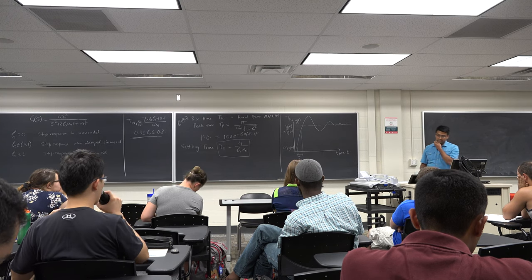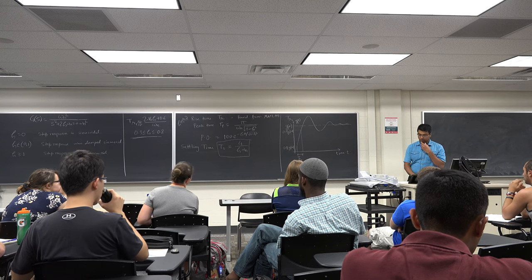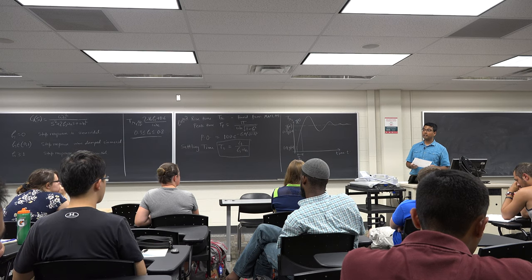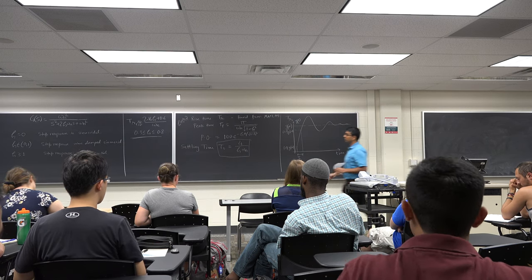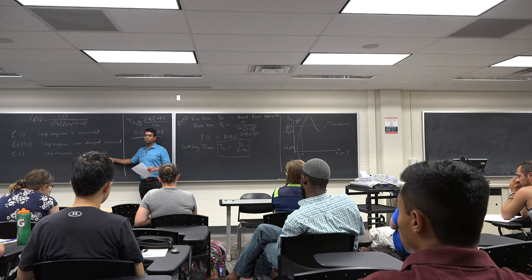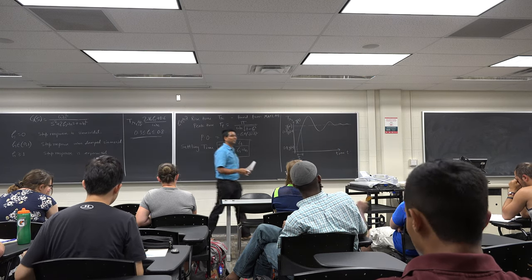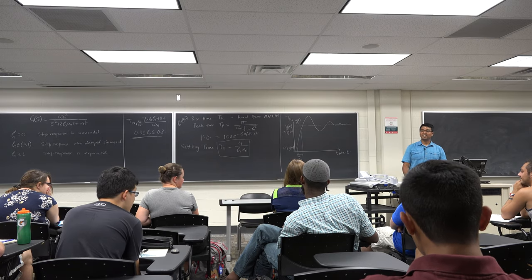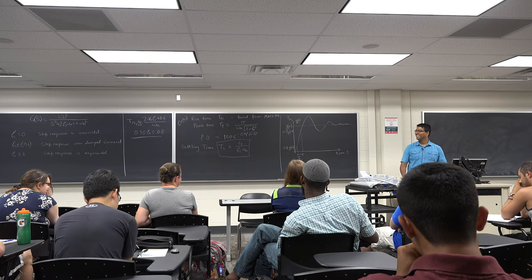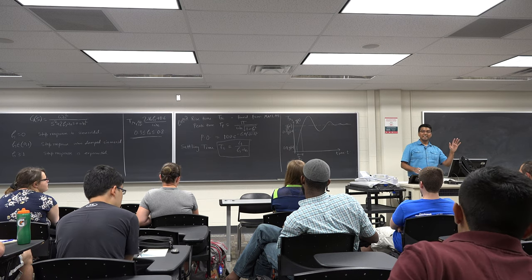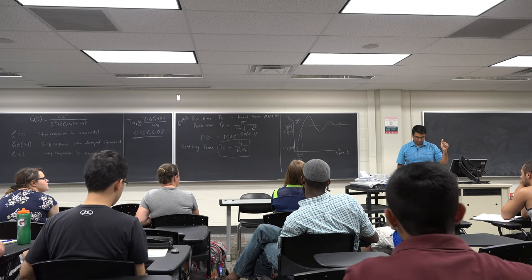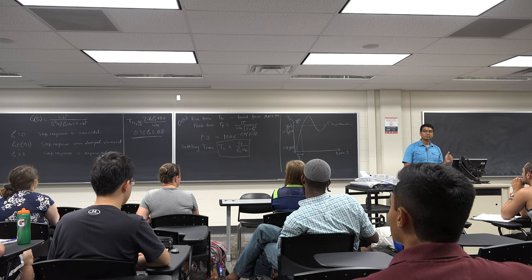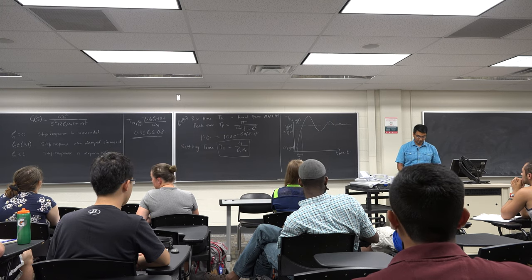I have two options: should we do a numerical example applying these ideas, or continue with step response for zeta greater than or equal to one? By audience poll, the class chose to do an example first.